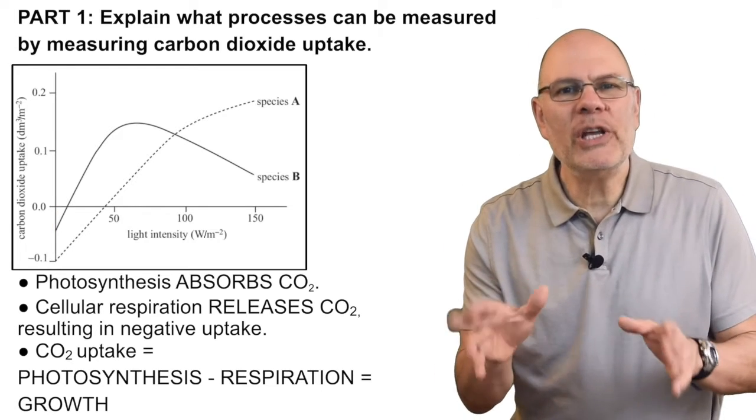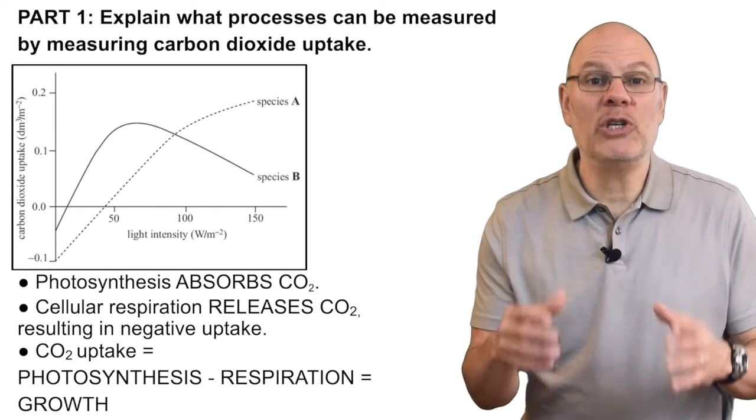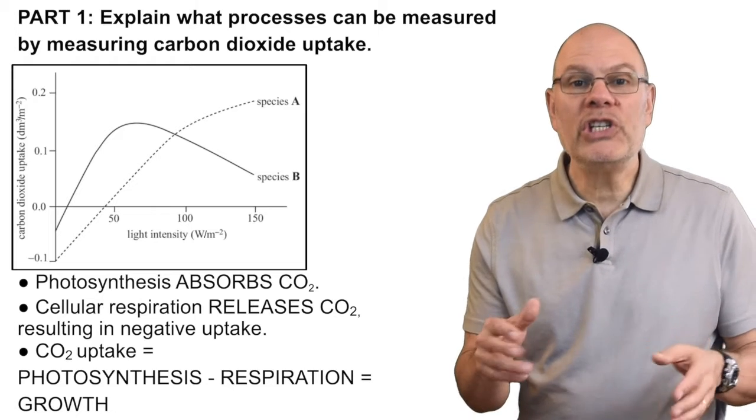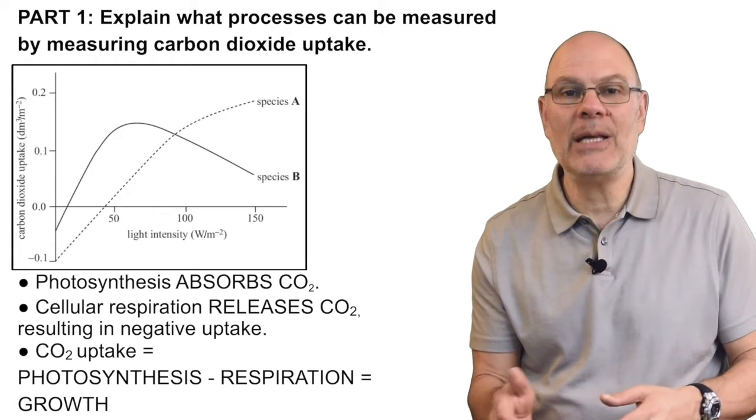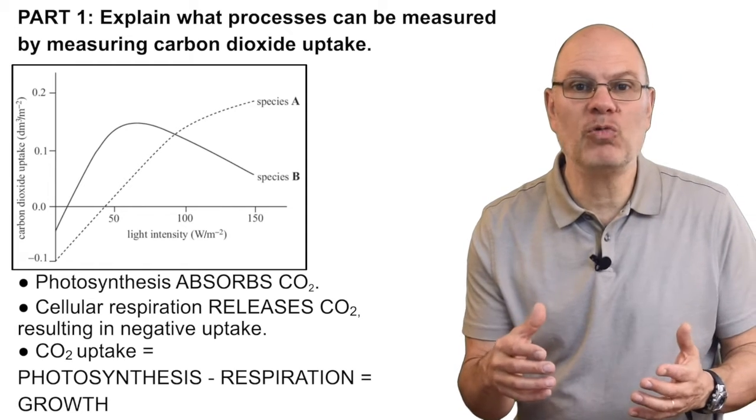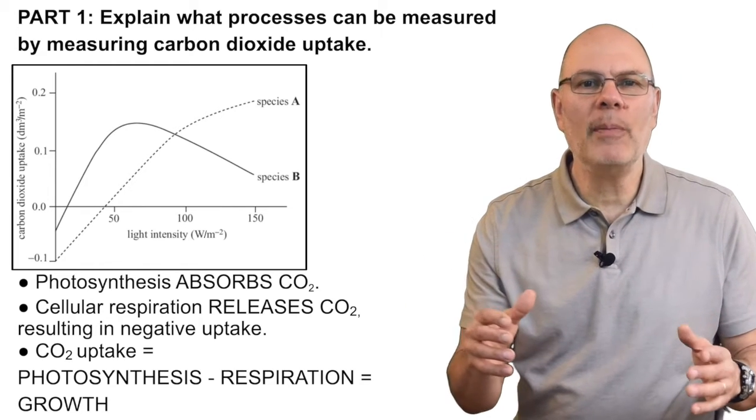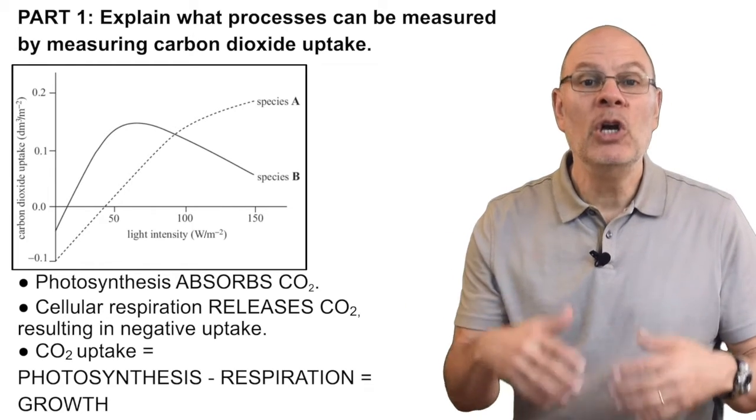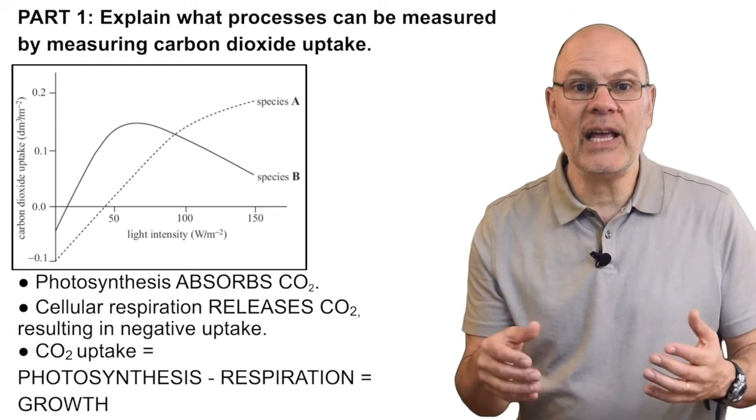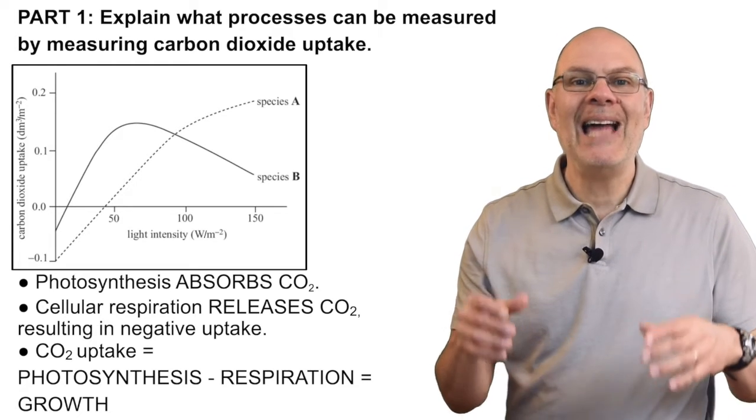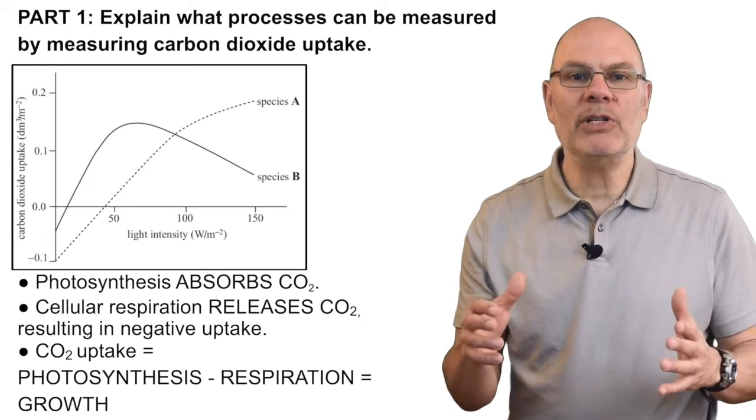At that point, all you see is respiration causing negative uptake as CO2 is released. By measuring CO2 uptake, you're also measuring growth. If more CO2 is being taken up by a plant than is being released by a plant, then the plant is growing. That surplus carbon dioxide is going to be absorbed during the carbon fixation phase of the Calvin cycle of photosynthesis, and it's going to be made into more plant material.